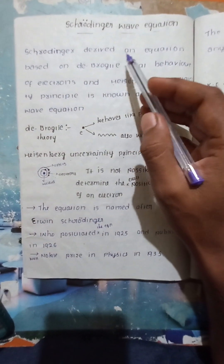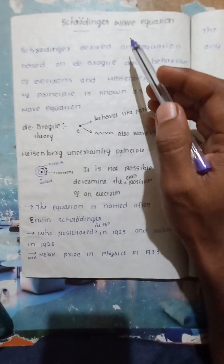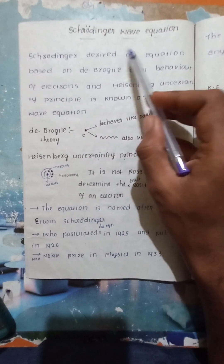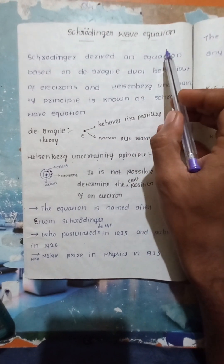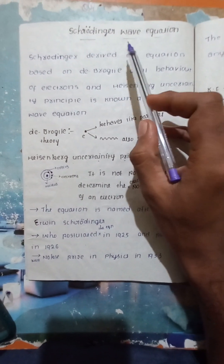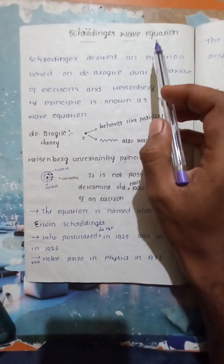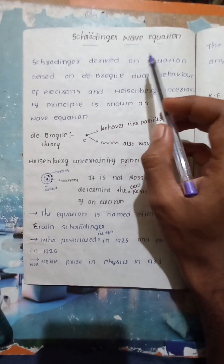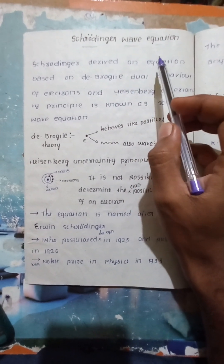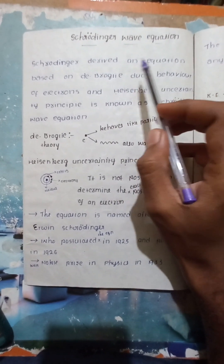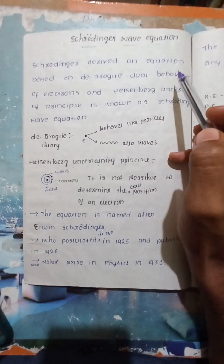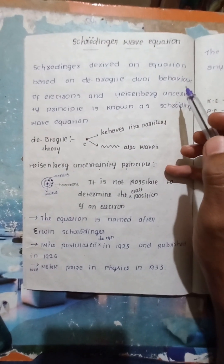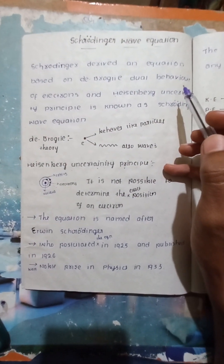Hi all, welcome to my channel. Today in this video we will discuss how to derive the Schrödinger wave equation in one of the easiest ways. It is an important question in applied physics — a gunshot question from the chapter on Schrödinger wave equation. First, some basic information.